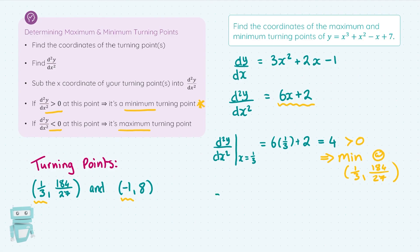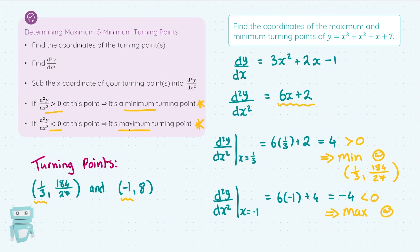Let's check out the other coordinate for x equals minus one. Here I get a result of minus four, and minus four is less than zero. If the second derivative is less than zero at this point, it's a maximum — so less than zero means maximum. This implies I have a maximum turning point at that x-coordinate of minus one and y-coordinate of eight.